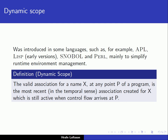The second possible scope rule is called dynamic scope. Remember the difference between static and dynamic: static is something that happens before execution, usually at compile time, and dynamic is something that happens at execution time. Dynamic scope was introduced in some languages, for example early versions of Lisp, Snowball, and Perl, mainly to simplify runtime environment management.